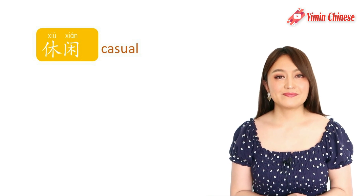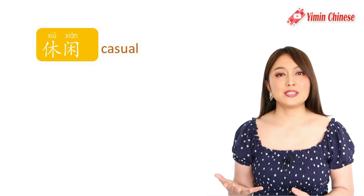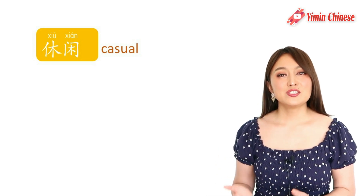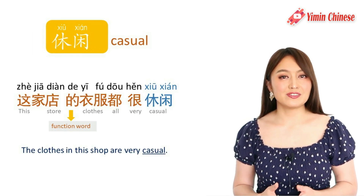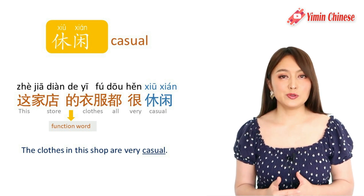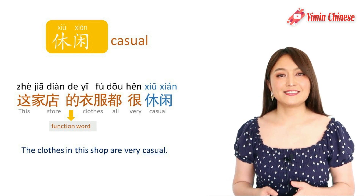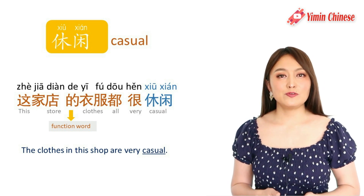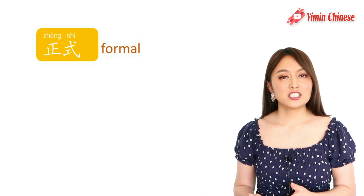Another useful adjective is 休闲 — casual. 休 shares the same character as in 休息 (rest). For example: 这家店的衣服都很休闲 — The clothes in this store are very casual. And the opposite of casual is formal — 正式.